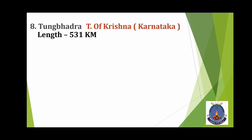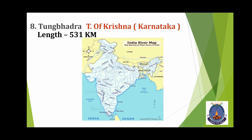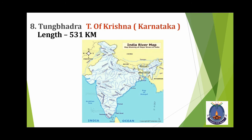Tungabhadra. यह Tributary River है Krishna की। यह Karnataka में से निकलती है। इसकी length है 531 km. आप देख सकते हैं।